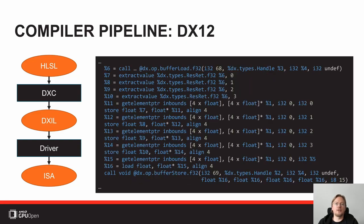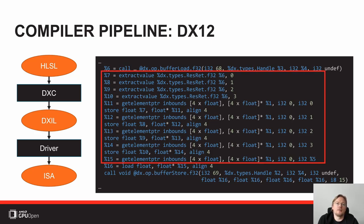Let's try with another shader compilation pipeline — in this case, the Direct3D 12 shader compilation pipeline. So we start with DXC now instead of FXC, which is the newer shader compiler. It produces a different intermediate representation called DXIL, which is based on LLVM IR, and that's the part of the code snippet here, which relates to the vector addressing instruction we saw before.